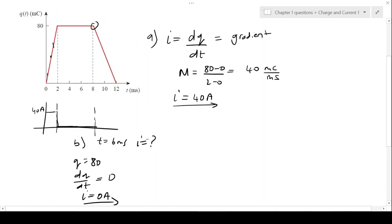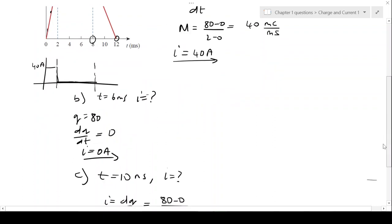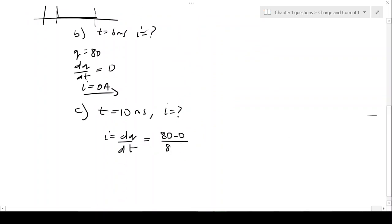The change in y over the change in x will be 80 over 8 minus 12. That's going to give us 80 divided by negative 4, which gives us -20 amps. The current is -20 amps.